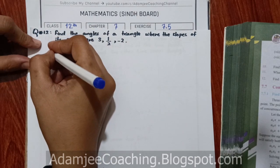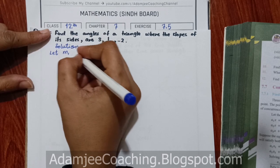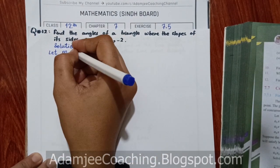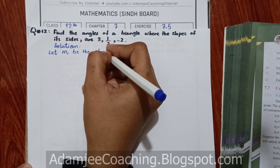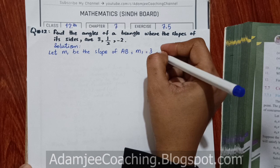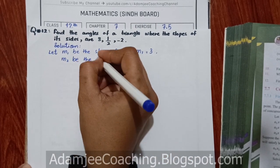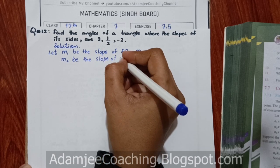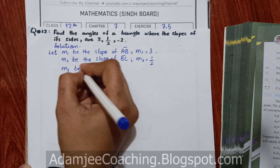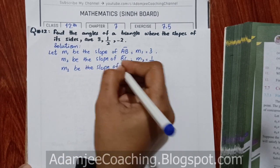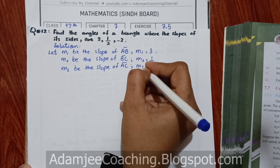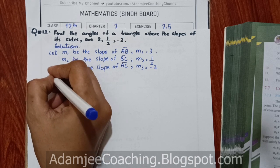Let M1 be the slope of AB. So M1 equals 3. And let M2 be the slope of BC, so M2 is 1/2. Similarly, let M3 be the slope of AC, so M3 is minus 2.